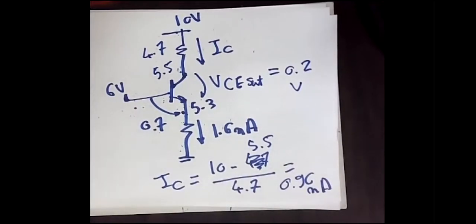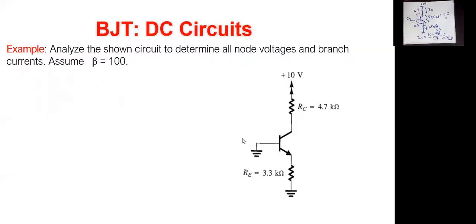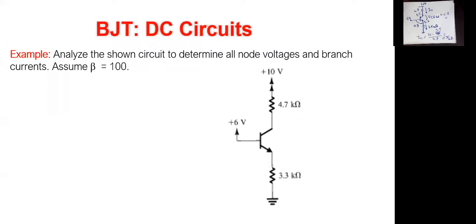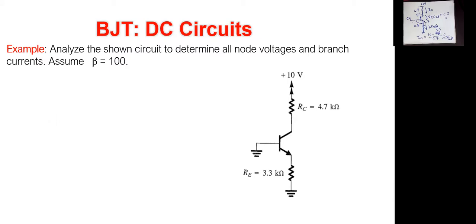Example 3 is a gift: the base voltage is zero (grounded base with no bias). Whenever the base voltage is zero, the transistor is turned off — cutoff mode. IB = 0, IC = 0 — no current flows. This is simply an open circuit. Once you have a grounded base with no other bias condition, your transistor is in cutoff mode. No need for further calculation.